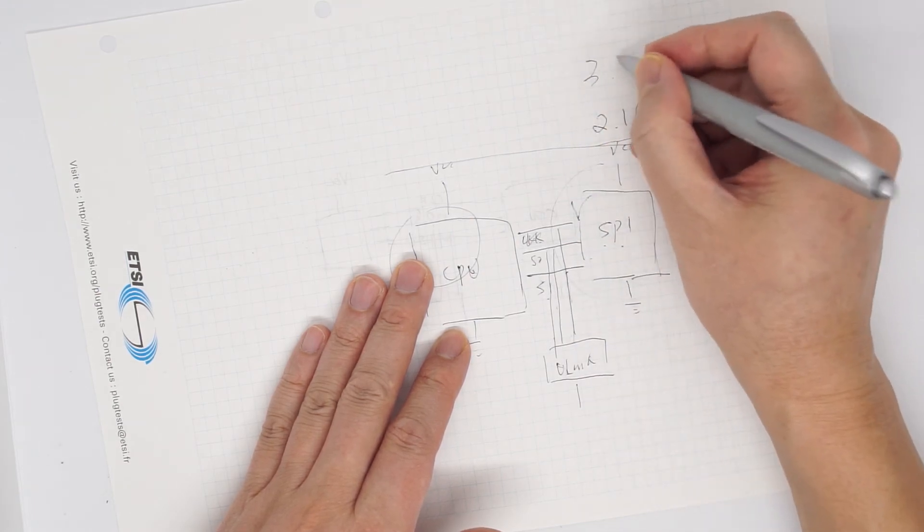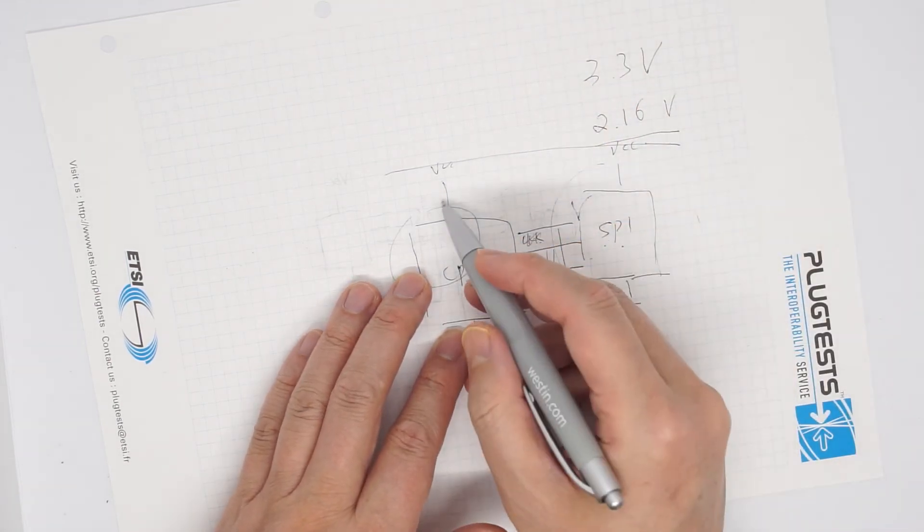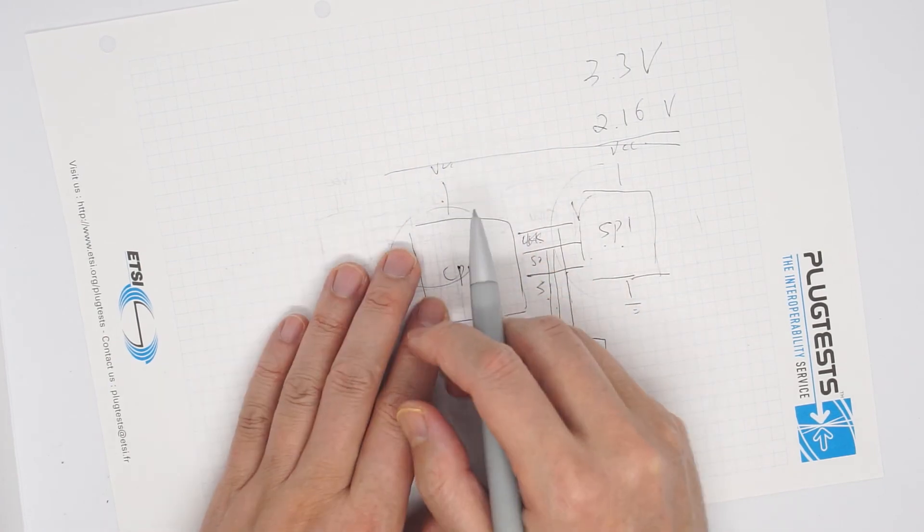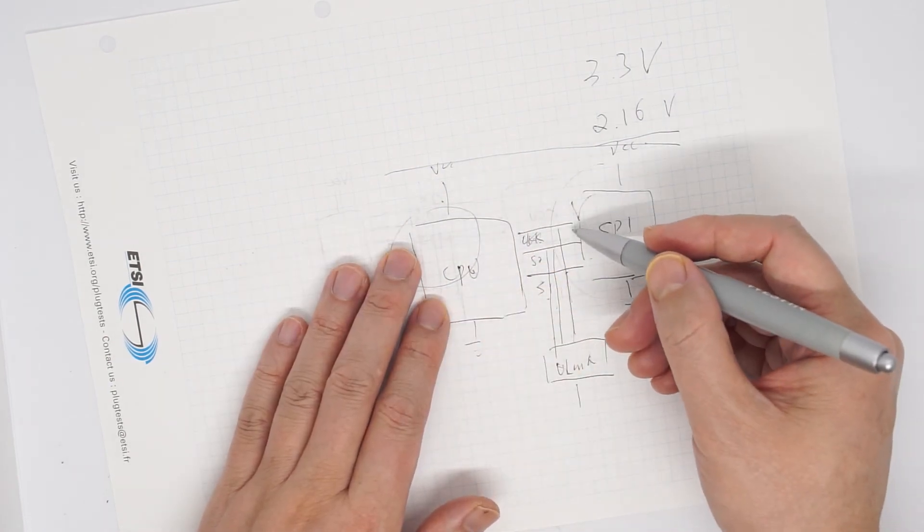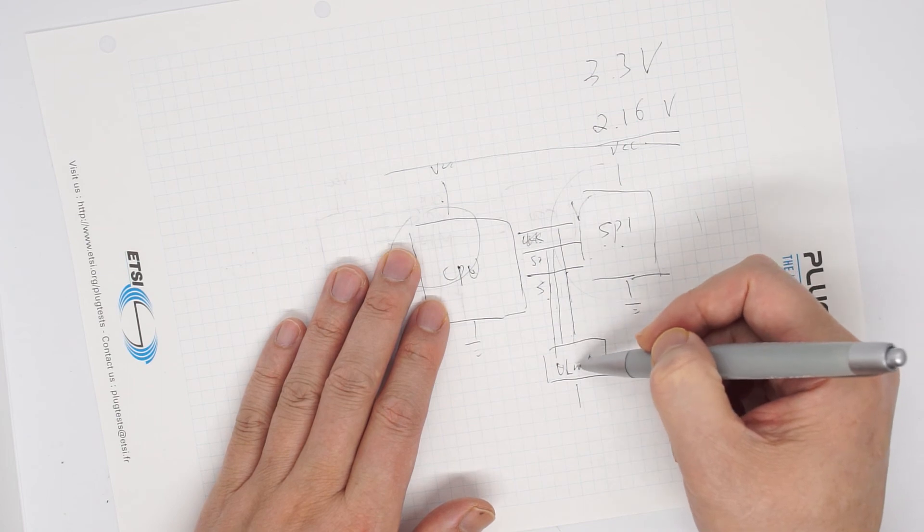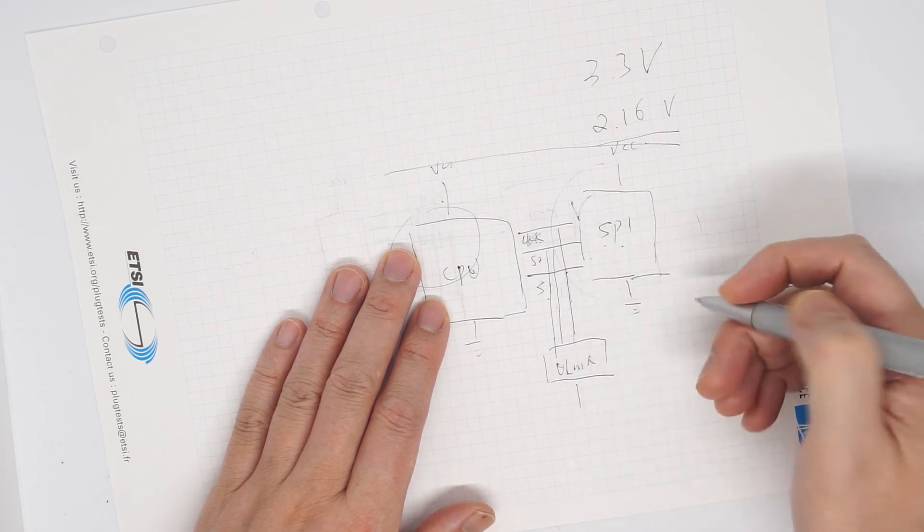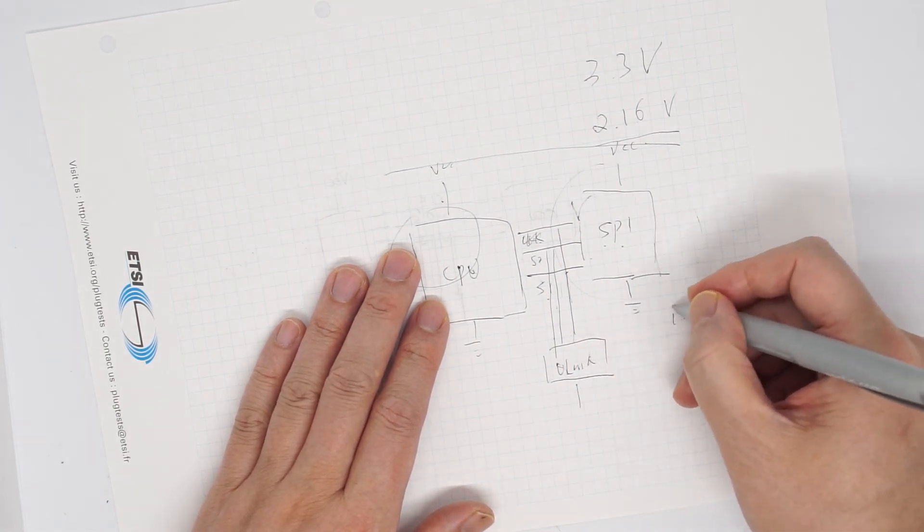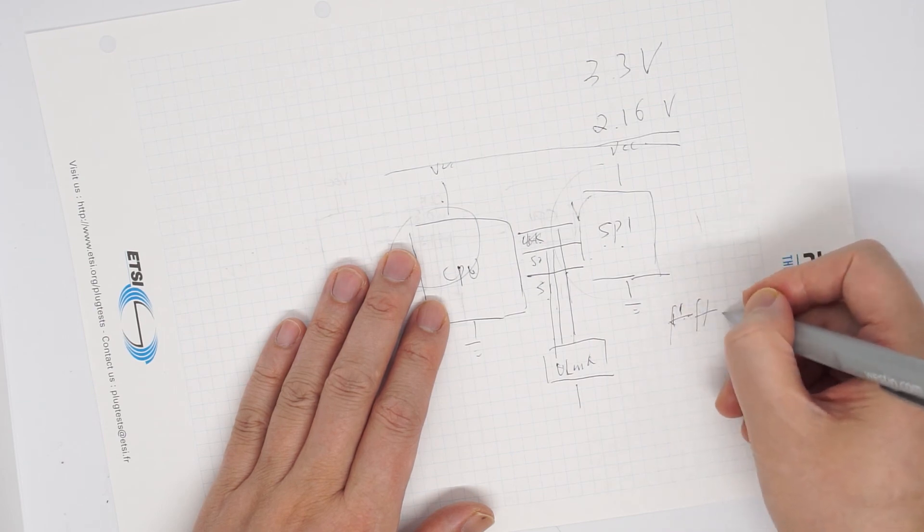If I raise this to 3.3 volt, CPU is going to be strong enough that during the muscling with the U-link NT, U-link loses. So we get all FFs. We cannot get any data, all FFs.